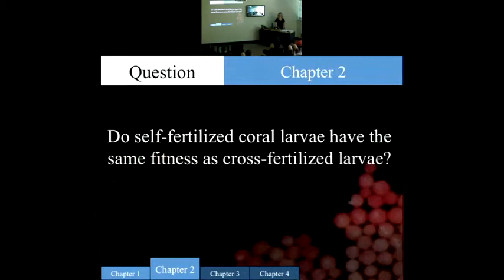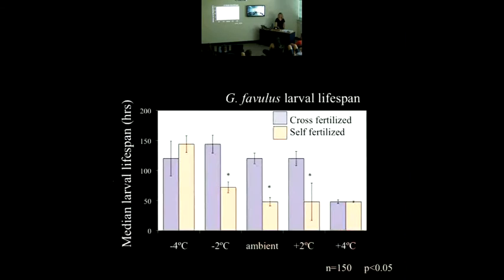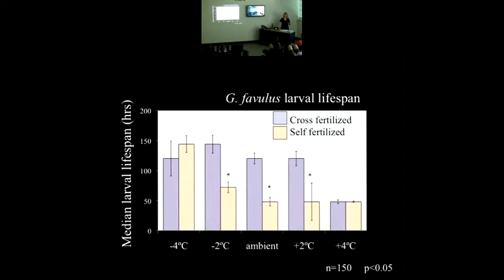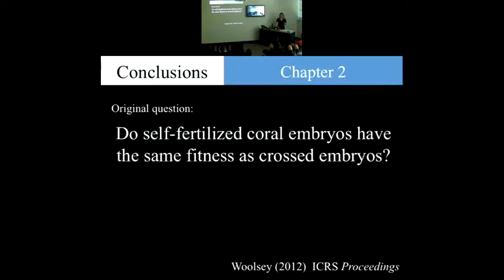Do self-fertilized larvae have the same fitness as cross-fertilized larvae? On the y-axis we have median larval lifespan, and the bars represent 95% confidence intervals. Self-fertilized embryos' lifespans were significantly lower than cross-fertilized embryos across temperatures from ambient, at minus 2, and at plus 2. At plus 4, they're both quite low. Interestingly, they didn't seem to be affected by lower temperatures, so maybe this strategy can work in colder waters at higher latitudes. But although it's better to breed with yourself than no one at all, it's probably not a great long-term strategy because it produces less healthy embryos.